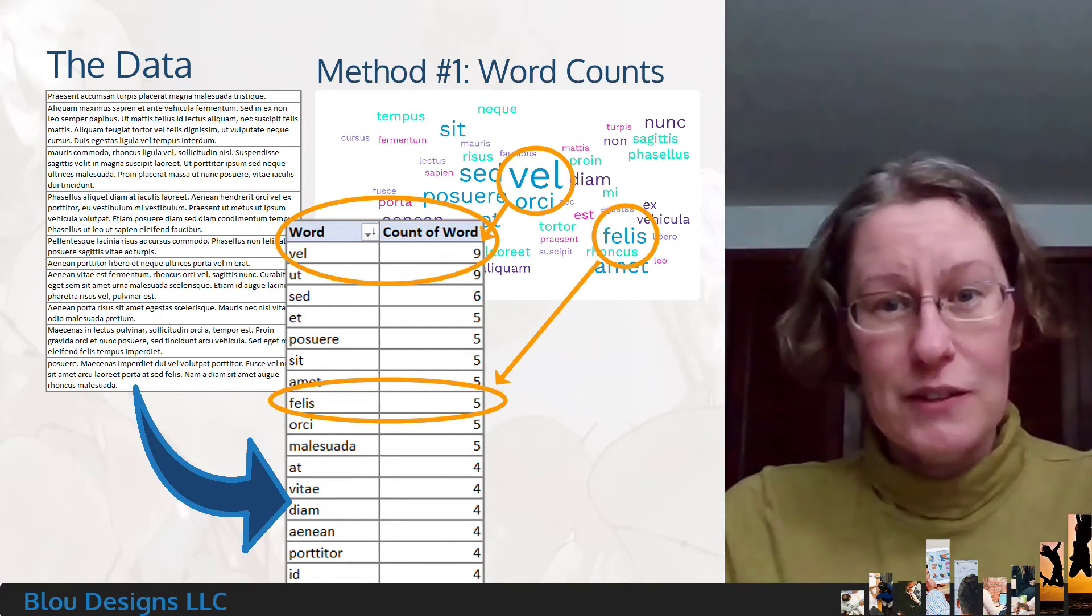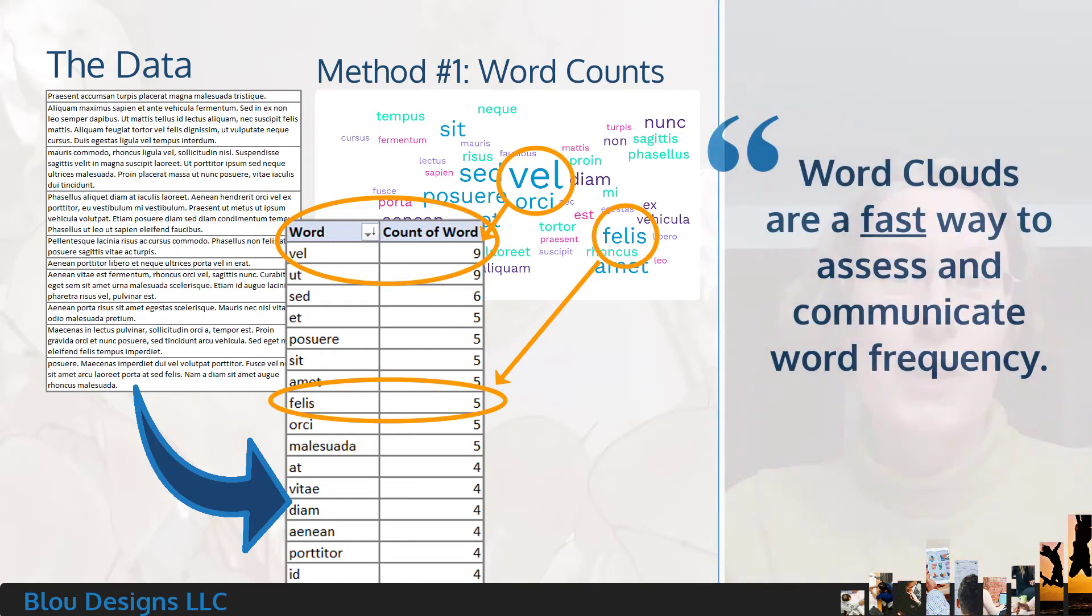There are tools that automate this process for you, so you don't necessarily have to do it yourself. If what you want to do is assess or communicate the frequency or popularity of words and phrases in your text data, this is probably the fastest way to do it, but it's not necessarily the most informative or useful analysis you can perform.